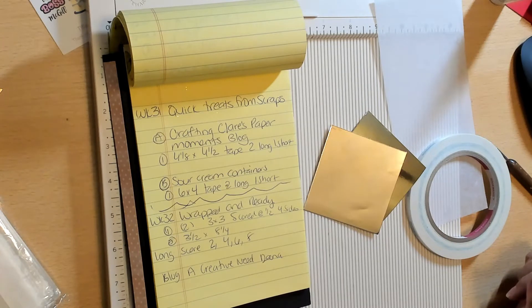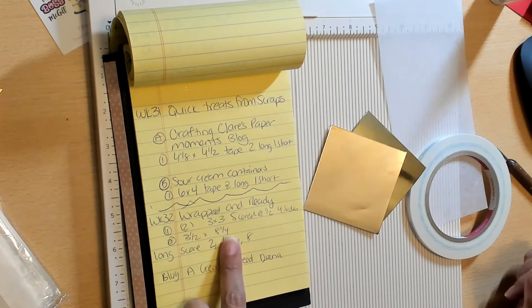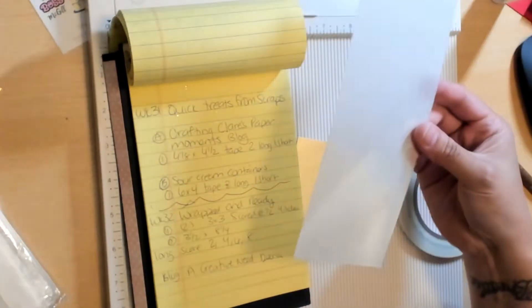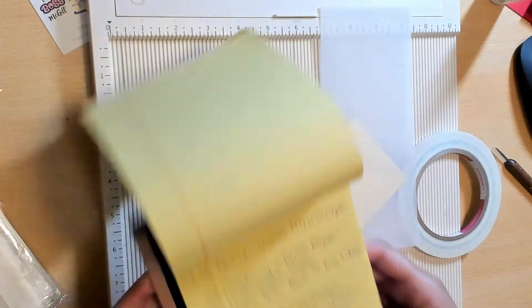And you're also going to need a piece of acetate that measures three and a half by eight and a quarter. So here's my acetate. I still have the backing on it so that way I could see it on my desk.